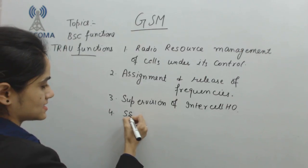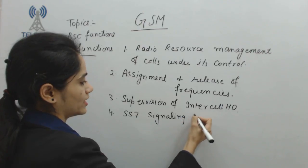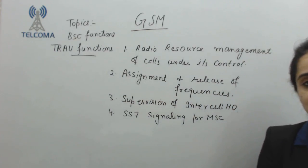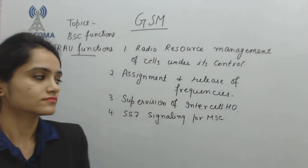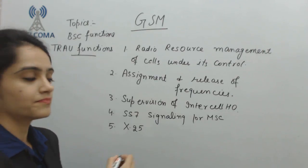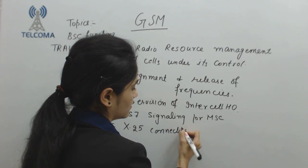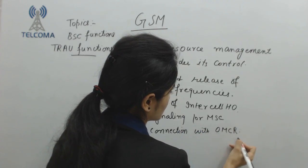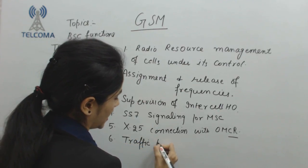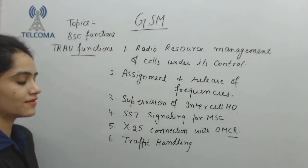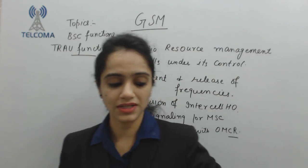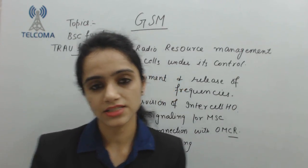Next, we have SS7 signaling for MSC. SS7 is Signaling System Number 7, which is a signaling process used by MSC for all control signals, and it is controlled by BSC. After that, we have X.25, which is a protocol connection — the X.25 connection with OMCR is also managed by BSC. Additionally, the function of BSC includes traffic handling, routing traffic from one BSC to different MSCs. BSC is basically a manager who controls all this traffic.